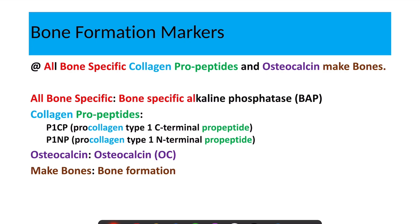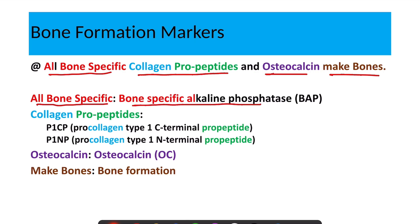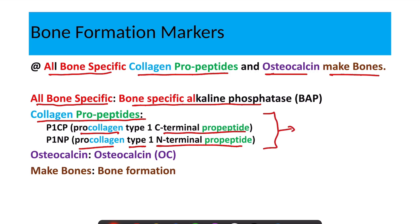The mnemonic for the bone formation markers is: 'All Bone Specific Collagen Propeptide and Osteocalcin Make Bonds.' Here, 'All Bone Specific' stands for bone-specific alkaline phosphatase, and 'Collagen Propeptide' refers to procollagen type 1 C-terminal propeptide and procollagen type 1 N-terminal propeptide. These propeptides are released into the circulation when procollagen breaks down into collagen and propeptide during bone formation.